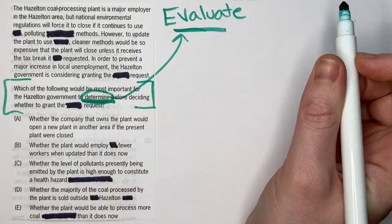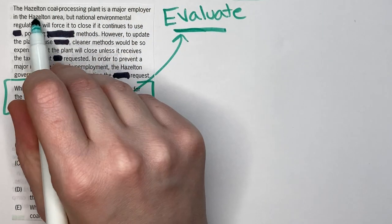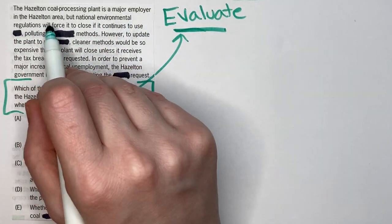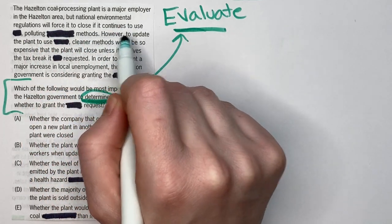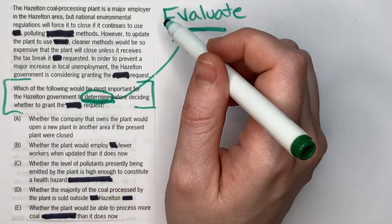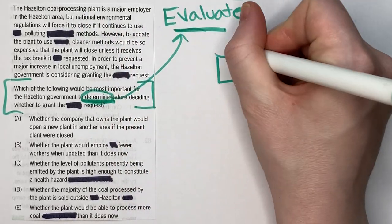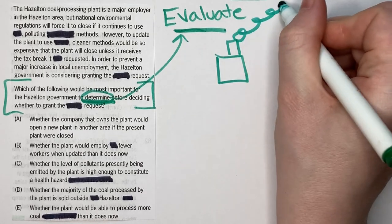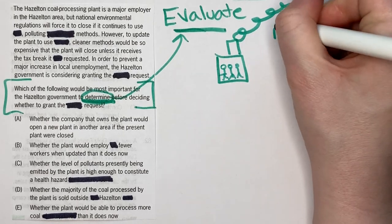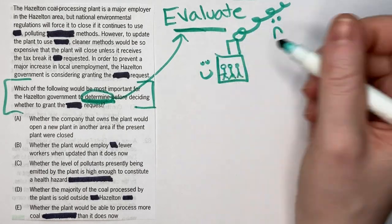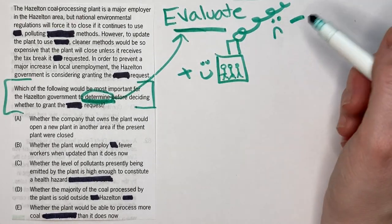The Hazleton coal processing plant is a major employer in the Hazleton area, but national environmental regulations will force it to close if it continues to use polluting methods. So we have this plant with a lot of employees, but it's got pollution — pros and cons: it employs tons of people, but it's polluting.